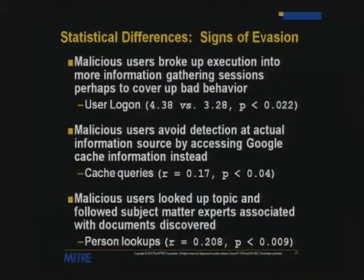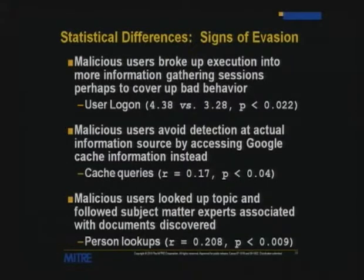We also found that malicious participants tended to take an indirect path to information. Whereas benign people would do searches and go directly to the information, the malicious group tended to look up people in the employee directory, find out who was associated with projects of interest, and then browse that person's shared space — everyone at MITRE has shared space accessible to all — to get at the information indirectly.